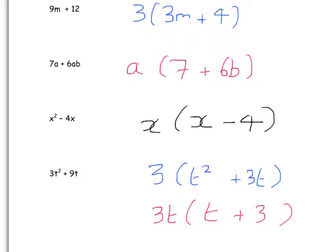So you can sometimes have to do factorising in two parts: first taking out a common number, and then taking out a common letter. Factorising is considerably harder than expanding brackets, so you do need to have a go at practising these questions. First, always look for a common value — a common number that goes into both parts — and secondly, is there a common letter that goes into both parts.